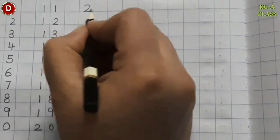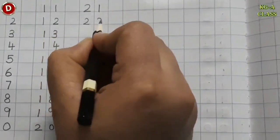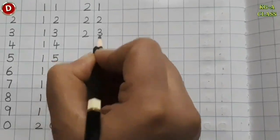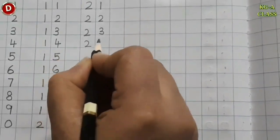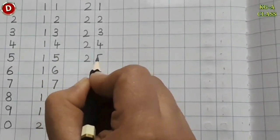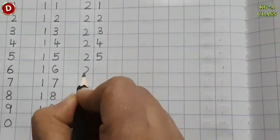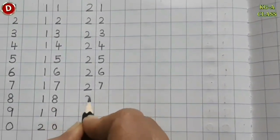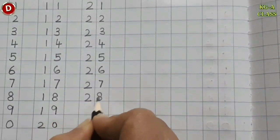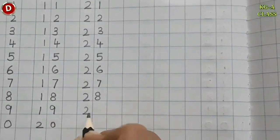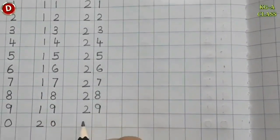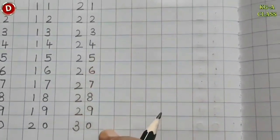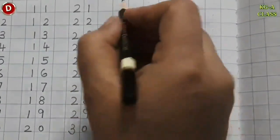Then comes 21, 22, 23, 24, 25, 26, 27, 28, 29 and then comes 30. After 30, leave the next line.